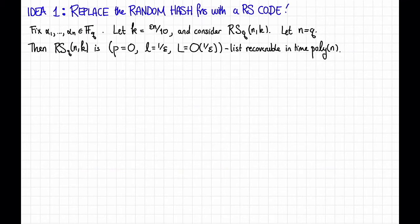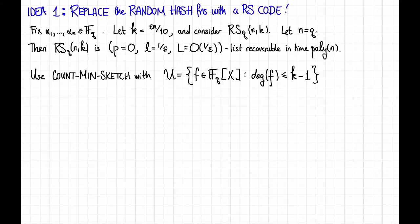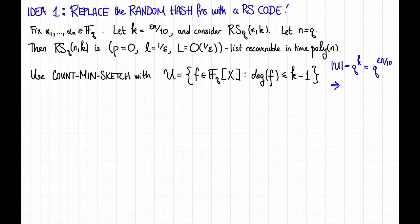So we've got our list recoverable Reed-Solomon code. Now we're going to implement the count min sketch algorithm but using this Reed-Solomon code instead of the hash functions. We're going to associate the universe with all of the polynomials of degree less than or equal to k minus 1. Notice that this implies the size of U is q^k, which equals q to the epsilon*n/10 or something like that. And this means that n is at most log(|U|) divided by epsilon. In particular, if we're doing stuff in time polynomial in n, that's going to be polylogarithmic in the size of the universe.